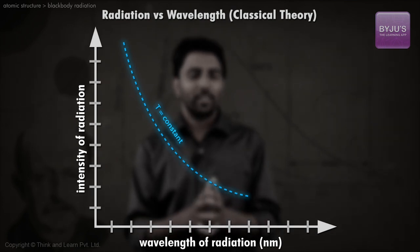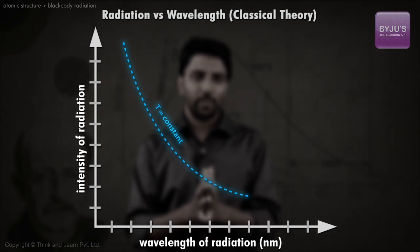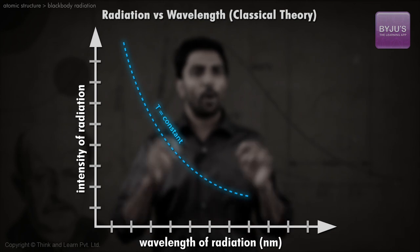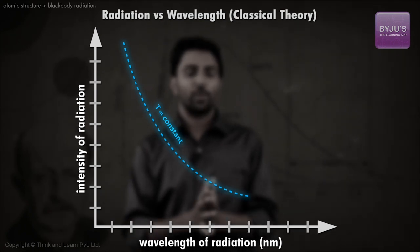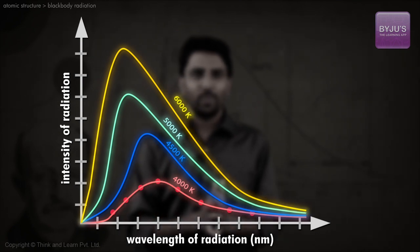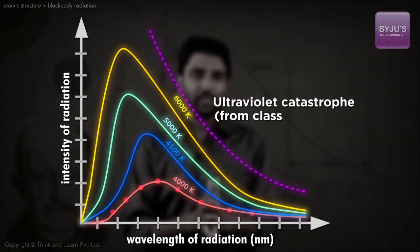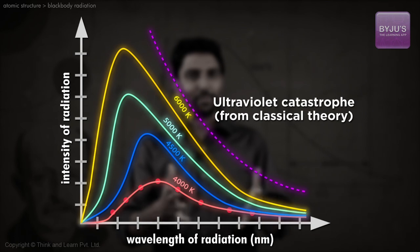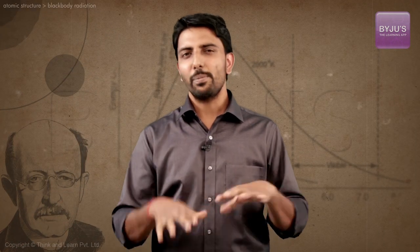If we assume that the classical theory is right, it suggests that all objects in the universe should be infinitely bright. But this clearly is not true. The incorrect prediction is called the ultraviolet catastrophe. Definitely something was missing in the classical theory.